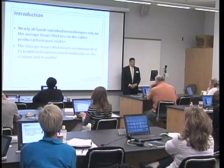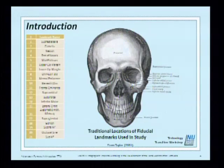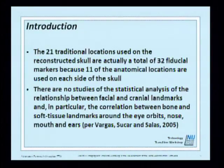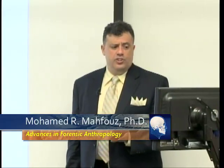Nearly all facial reproduction techniques rely on average tissue thickness from tables produced in past studies. The average tissue thickness is measured at 21 traditional craniometrical landmarks on the cranium and mandible. These are the well-known 21 landmarks and traditional locations used — the fiducial landmarks. The 21 traditional locations on reconstructed skulls are actually a total of 32 fiducial markers, because 11 of the anatomical locations are used on each side of the skull.